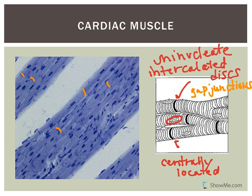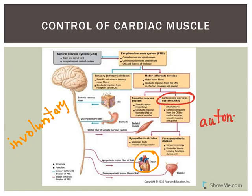Cardiac muscle is only located in the heart. It is involuntary and can contract on its own because it has pacemaker cells. However, the autonomic nervous system can influence heart rate as well as contractility. The heart can also be influenced by hormones such as thyroid hormones, epinephrine, and norepinephrine.